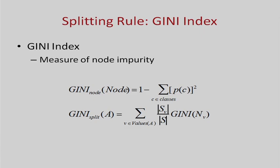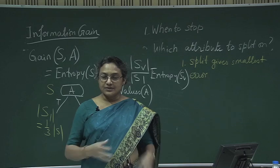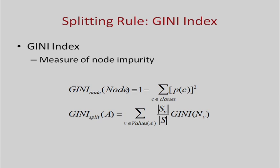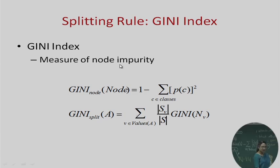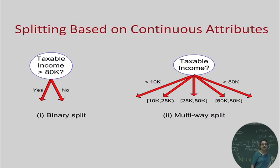Other than information gain, there are other measures for deciding the attribute for a decision tree. One popular measure is the Gini index, another measure of node impurity. The Gini index of a node is computed as 1 minus the sum of Pc squared over all classes C, where Pc is the probability of class C estimated by the fraction of examples belonging to that class. The Gini index of a split for attribute A is: the sum over the values of the attribute of the fraction of training examples belonging to that value times the Gini index of that node. The Gini index is another heuristic that can be used for decision trees.